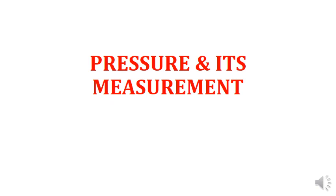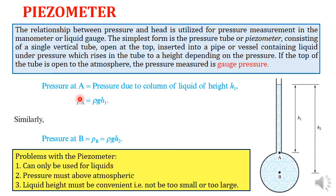Assalamu alaikum guys, today we are going to start with the second part of the chapter on pressure and its measurements, which is also related to hydrostatic pressures. Last time we derived the relationship between pressure and pressure heads in the form of p = ρgh, where p is the pressure and h is the pressure head. Today we will apply this relationship to measure pressures using different devices.